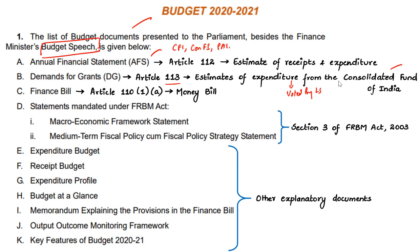Third is the Financial Bill. At the time of presenting the Annual Financial Statement, a Financial Bill must also be presented as per Article 110 clause 1(a). This article details the imposition, abolition, remission, alteration or regulation of taxes proposed in the Union Budget, and other provisions relating to the budget classified as money bill. Whatever changes are made to the tax structure are passed in the form of a Financial Bill. A Finance Bill is a money bill as defined in Article 110 of the Indian Constitution.